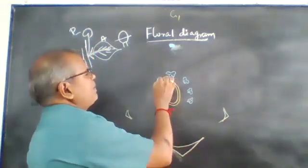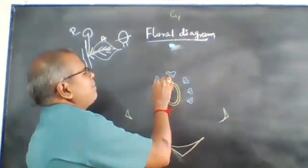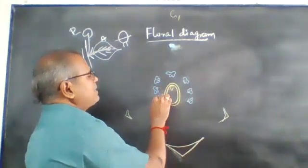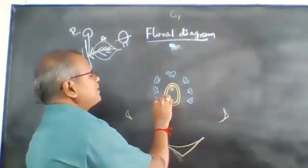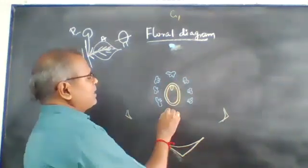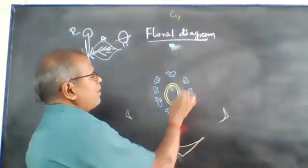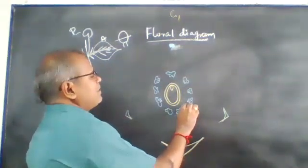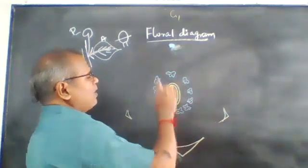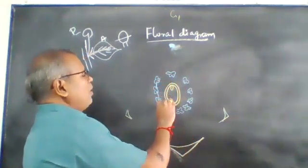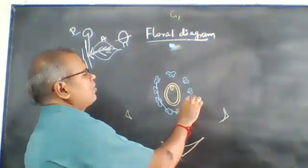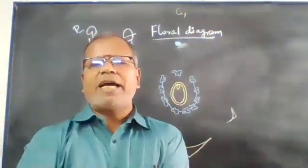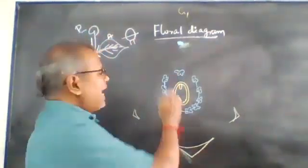Androecium — so now I have 10 stamens. If you count the stamens: 1, 2, 3, 4, 5, 6, 7, 8, 9, 10. In the androecium, 9 stamens are united in a single bundle and one stamen is free — diadelphous stamens.